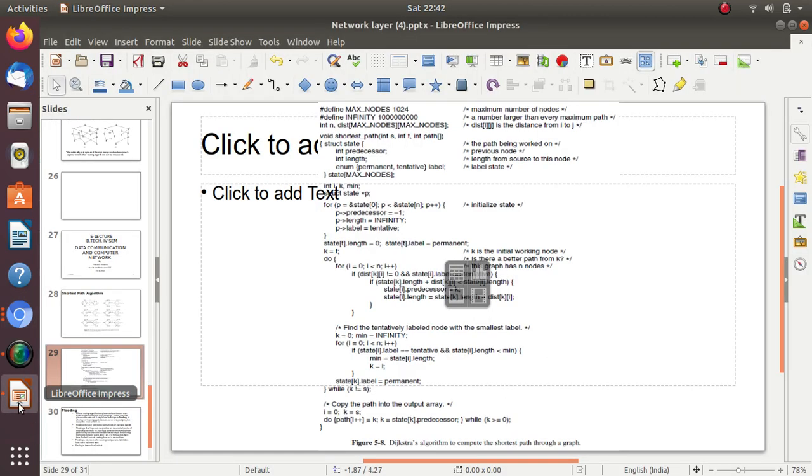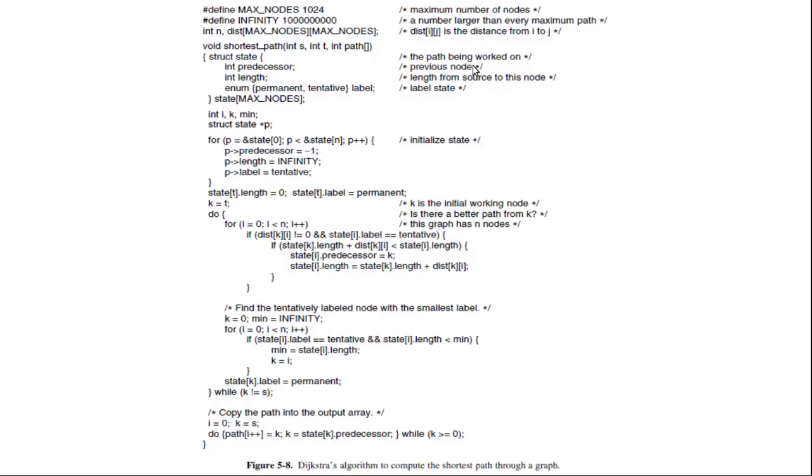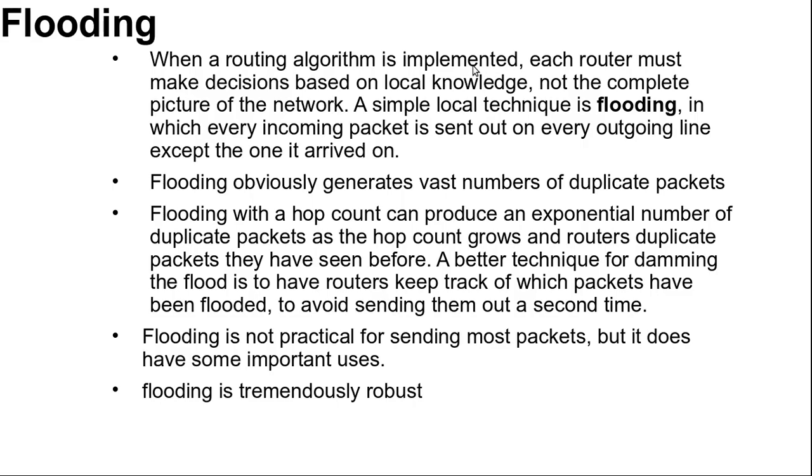Our next topic is flooding. When a routing algorithm is implemented, each router must make decisions based on local knowledge, not the complete picture of the network. A simple local technique is flooding, in which every incoming packet is sent out on every outgoing line except the one it arrived on. Flooding obviously generates vast numbers of duplicate packets.